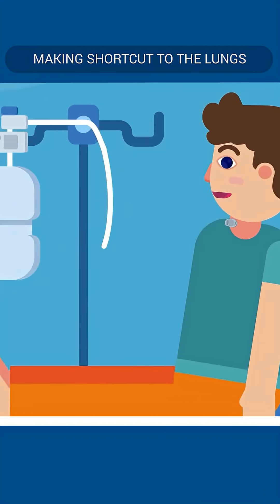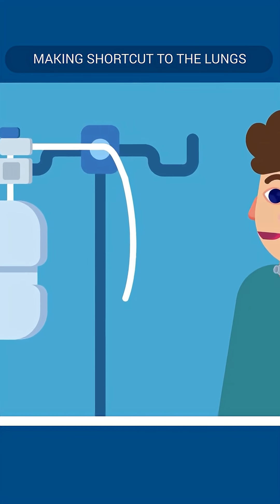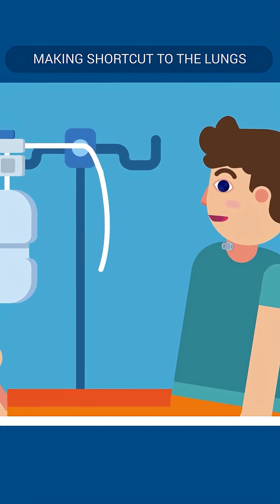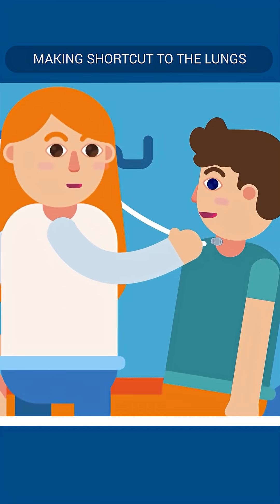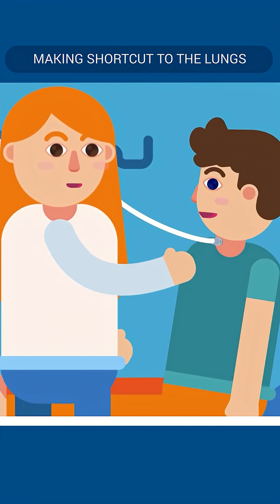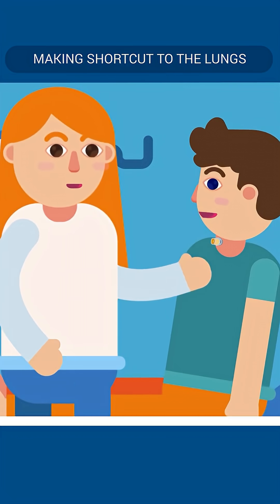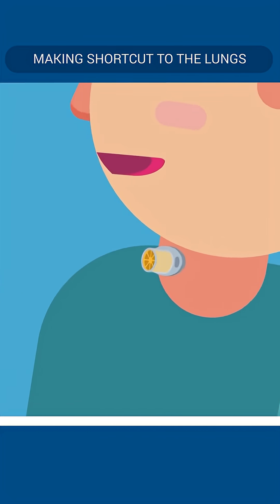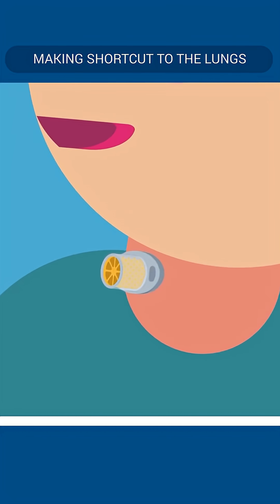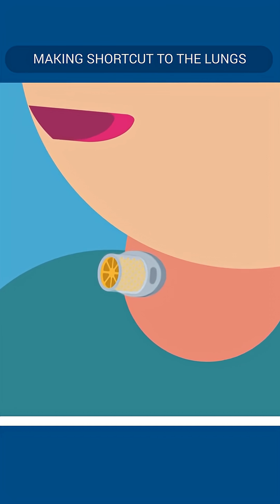Secondly, humidification of air. This can be done with humidified air attached to the tube, placing a humidifier or steam near the patient's bed, or applying a wet porous gauze onto the tracheostomy tube, although the latter is considered a crude measure.